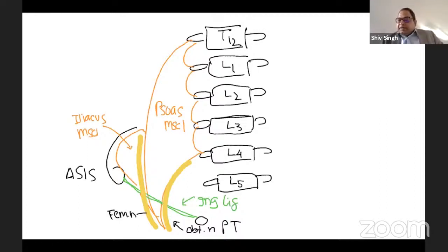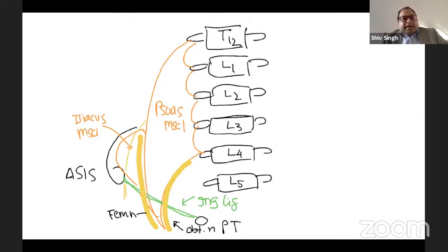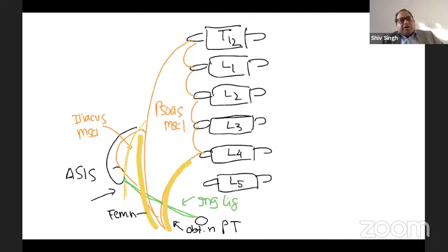The lateral cutaneous femoral nerve, or lateral cutaneous nerve of the thigh, comes out midway through the psoas sheath, piercing through it.